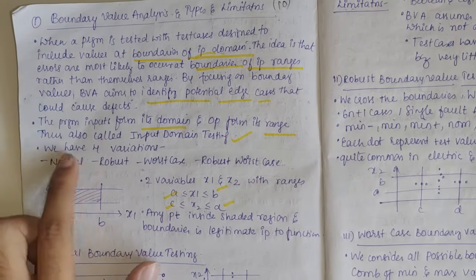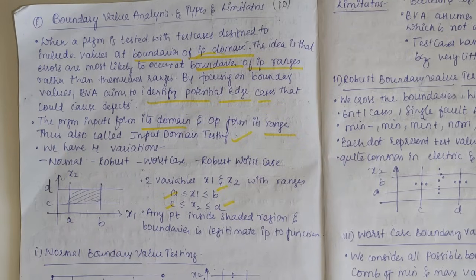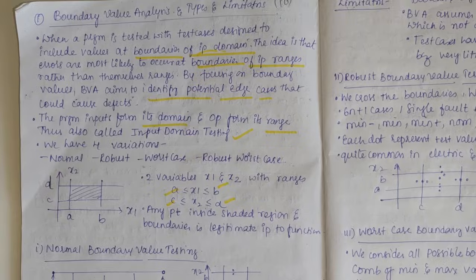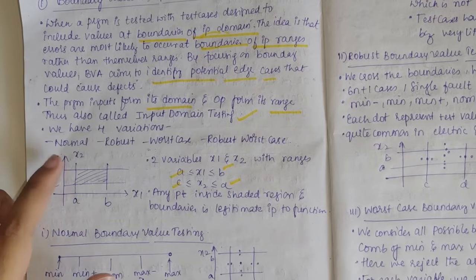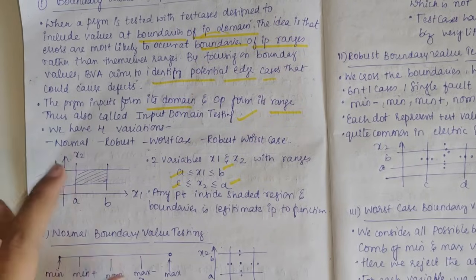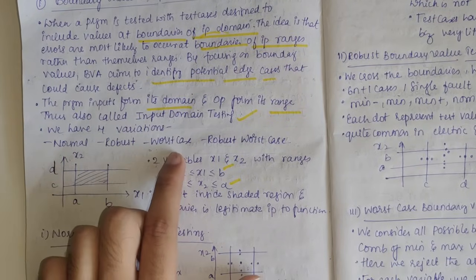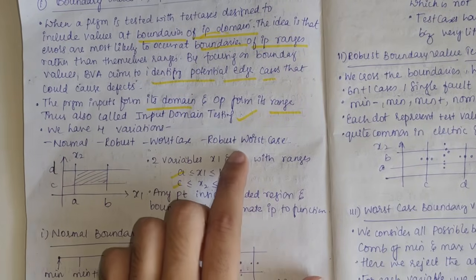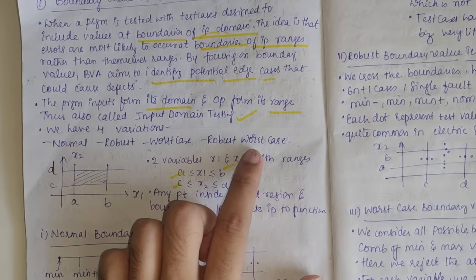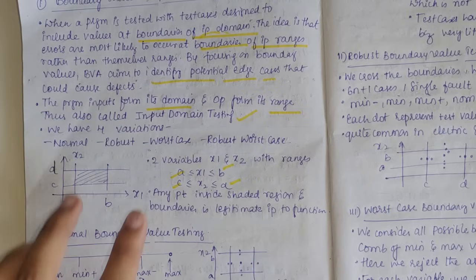There are four variations of boundary value analysis: the first being normal BVA, then robust BVA, worst case BVA, and robust worst case BVA.